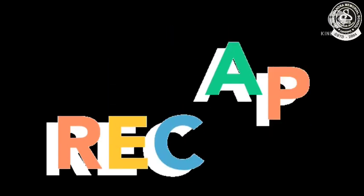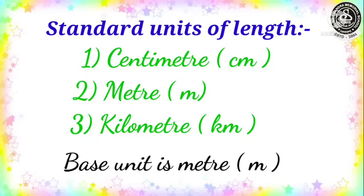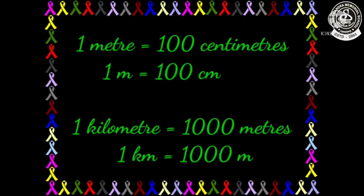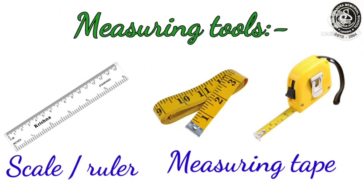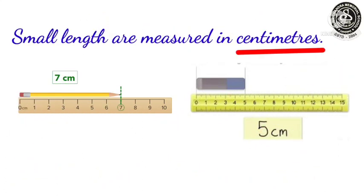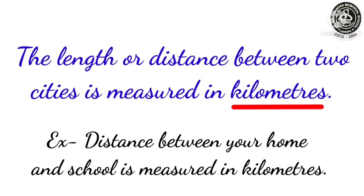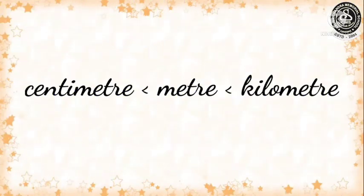Now let us recap. The standard units of length are centimeter, meter, and kilometer. One meter is equal to 100 centimeters, and one kilometer is equal to 1000 meters. The measuring tools are scale and measuring tape. Small lengths are measured in centimeters, longer lengths in meters, and the distance between two cities is measured in kilometers.